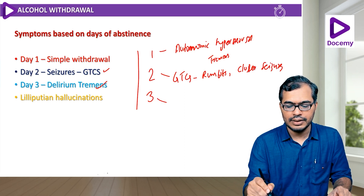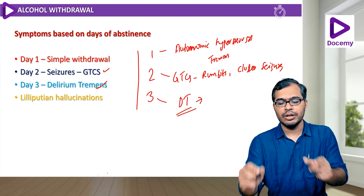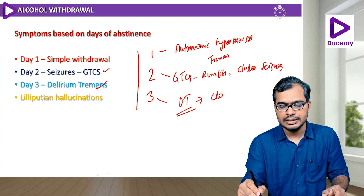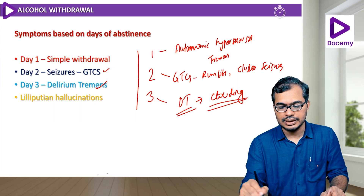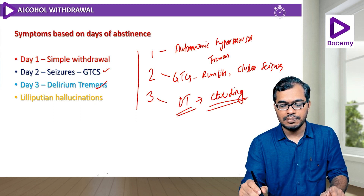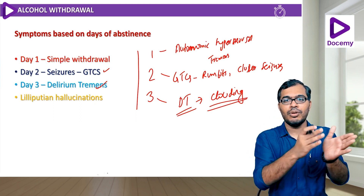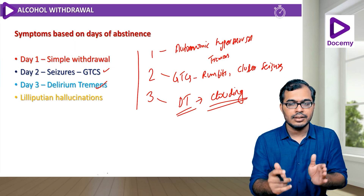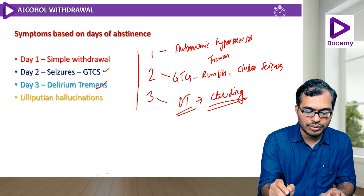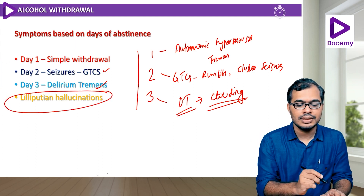On day three, the patient will have delirium tremens. Delirium means clouding of consciousness with disorientation to time, place, and person. In delirium tremens, the patient will have cold shaking of the body. Very important — multiple MCQs have been asked on this.